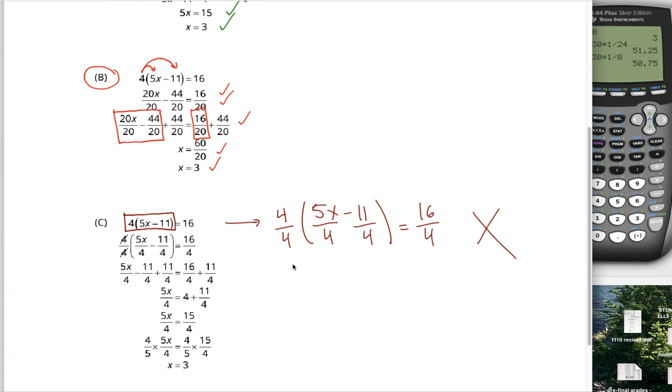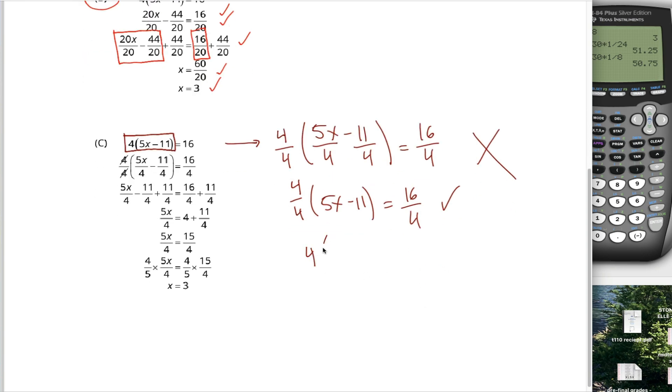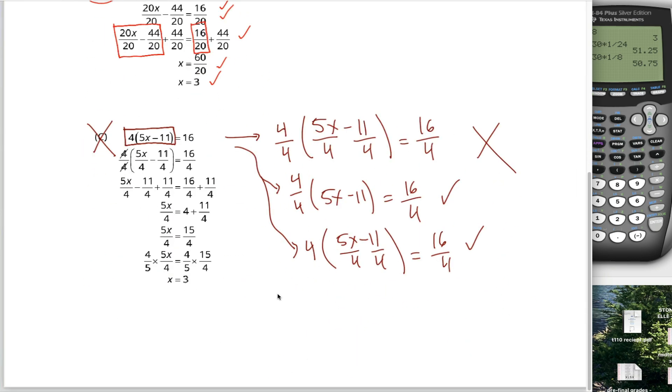If they had written 4 divided by 4 times 5x minus 11 equals 16 over 4, that's completely legit. If they had written 4, 5x minus 11 over 4, or divided each of these terms individually by 4, that's completely legit. You can divide the stuff outside the parentheses by 4 or the stuff inside the parentheses by 4, but you cannot divide both the stuff inside the parentheses and the stuff outside the parentheses by 4 unless you divide the right side of the equation by 16. Before the student went and canceled out these 4s, they made this mistake. They should have either gone here or gone here. They did not. They're incorrect. C is wrong. The correct answer is A and B to this problem.